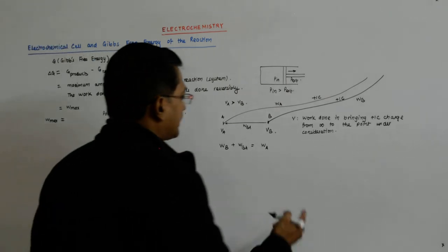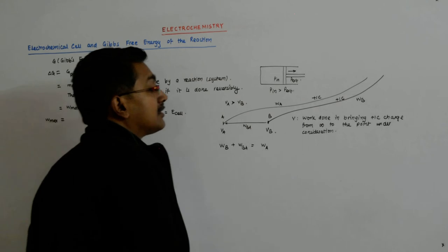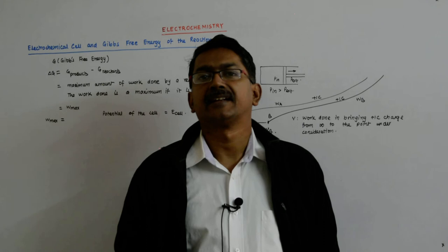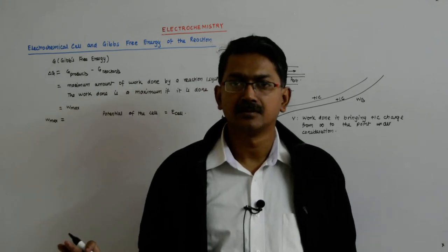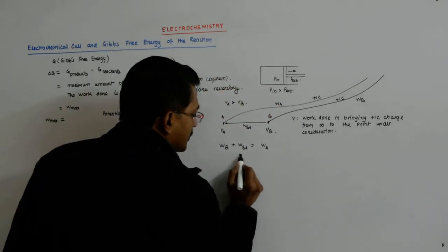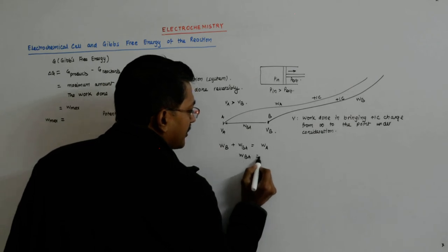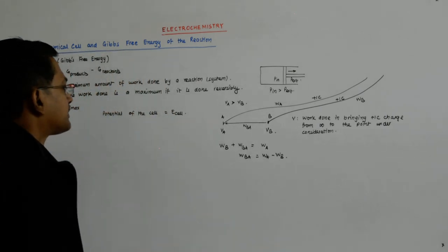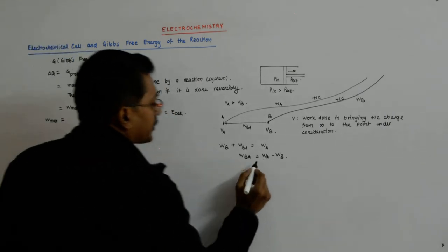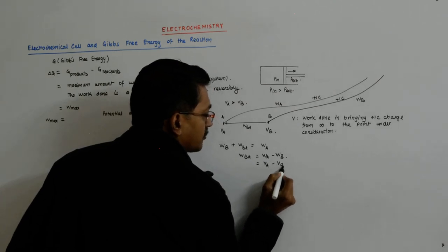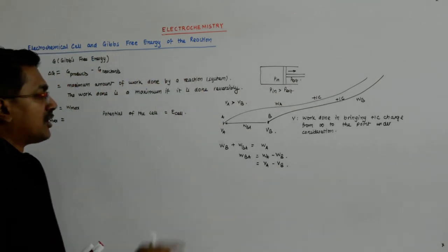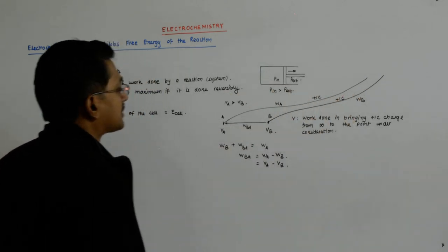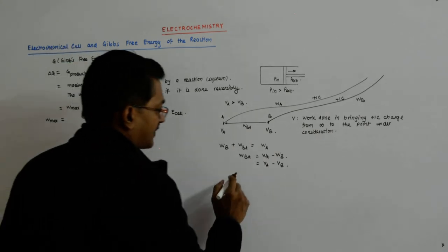Because this is a conservative field, the path you take in bringing an object from infinity to point A is immaterial. So we come to the conclusion that W-B-A equals W-A minus W-B. And this is what you term as potential — the work done in getting a plus one coulomb charge from infinity to point A is termed as V-A.